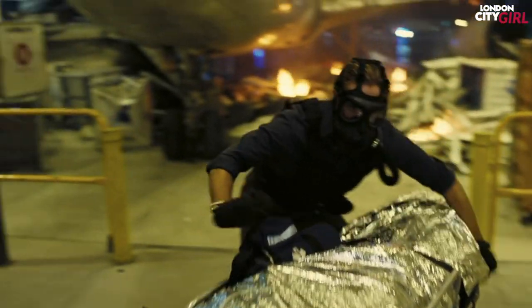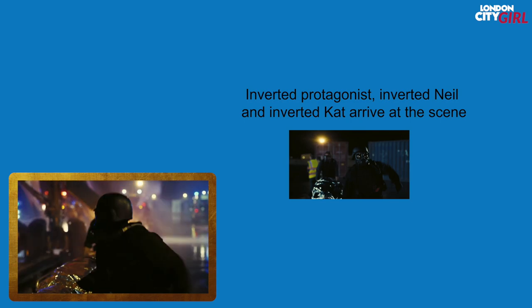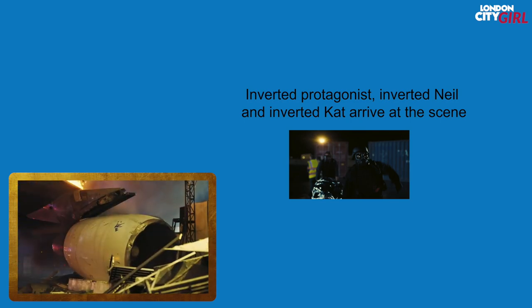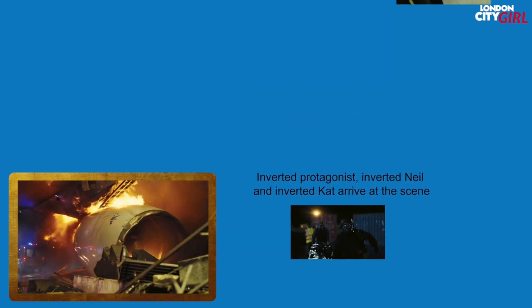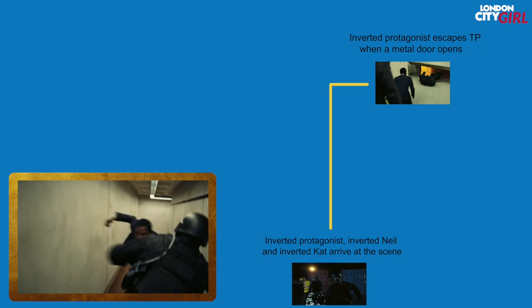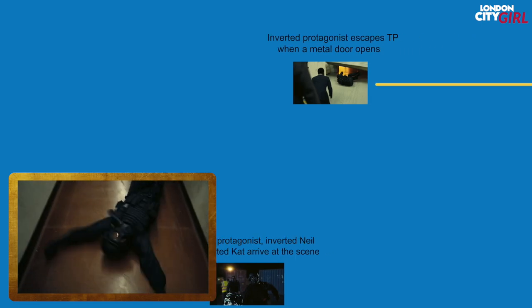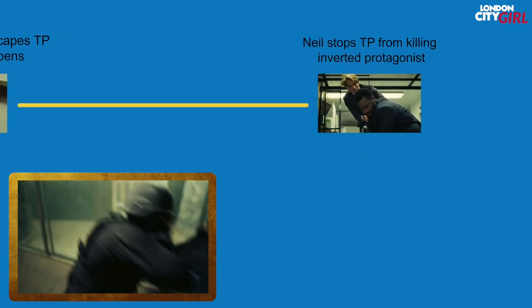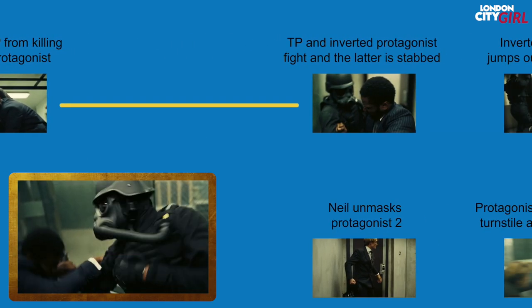Now let's go through our timeline in the backwards direction and see what the inverted protagonist, inverted Neil and inverted Cat experience as they go backwards through the series of events. The three arrive at the scene just as a plane jet engine explodes, so they wait for the events to rewind, and when the door opens again the inverted protagonist goes in. The inverted protagonist works through the events in the opposite direction, fighting with the protagonist as he makes his way towards the turnstile, and gets stabbed just before he is able to go in.